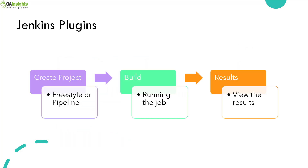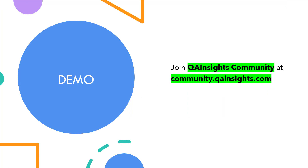So this is the high-level overview. First, we will be creating a project — we will see both freestyle and pipeline. We are going to run the jobs and then see how to generate the results in Jenkins. It's time for a quick demo. Let us log into Jenkins and see how we can integrate JMeter with Jenkins.